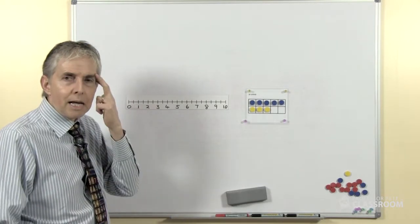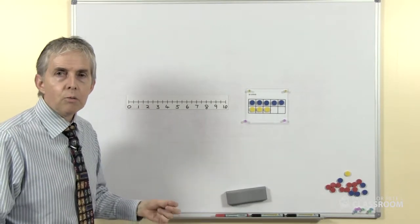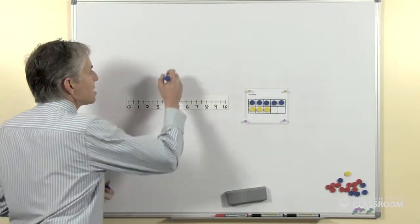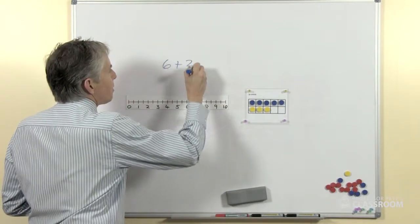But for counting on 1, 2, or 3, the number line actually emphasizes what we want, which is the counting on aspect. So if we were to say, what is 6 plus 2?